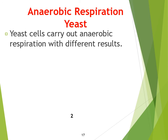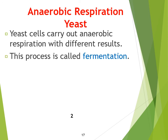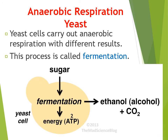Anaerobic respiration also occurs in organisms such as yeast — it's not only inside our body but also in yeast cells. When this happens in yeast it's called fermentation, and we use fermentation a lot, especially in making breads and making alcohol. What happens is the sugar gets into the yeast cell and fermentation occurs. The byproducts are ethanol or alcohol and carbon dioxide, and you get two ATP molecules of energy out of it. That's anaerobic respiration in yeast.